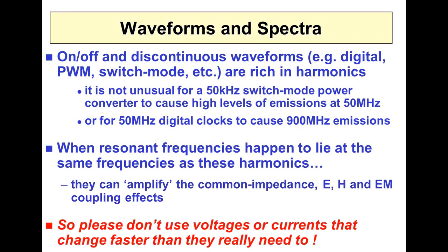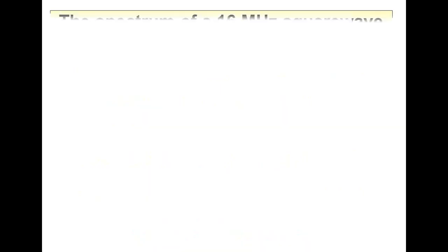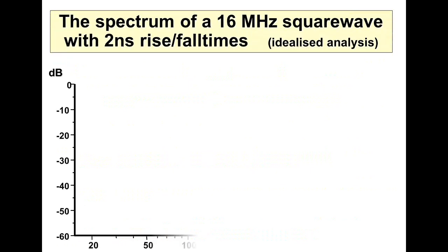The first thing is not to use voltages or currents that change faster than they really need to. This is a bit of a joke in a way, because we just have to buy the latest chips to get what we want, and they switch at the speed they switch at. So maybe we need to filter the outputs. But if you do have control of voltages or currents, then really don't have them changing too fast.